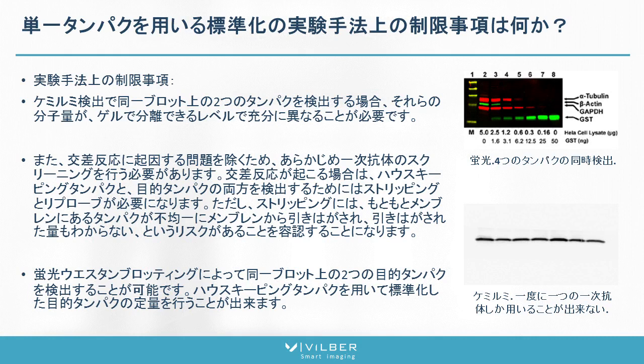One key limitation for in-lane normalization is that when you go for chemiluminescence, you can have only one antibody at a time — one antibody means one protein, so it is very difficult to have two proteins simultaneously on the same blot. If you want different proteins, you need to go for blot washing, but washing damages your blot and you cannot be very confident with the data you have after the washing.